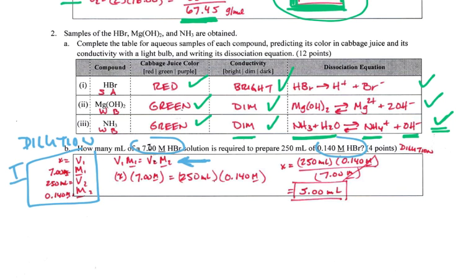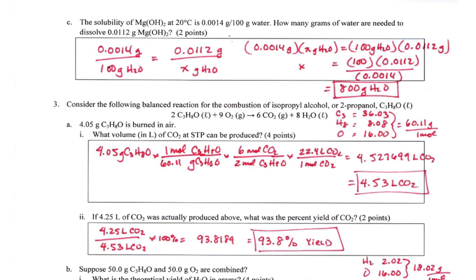Then I just substitute into my equation. So I is my information, E is my equation, S I substitute it in right here. And then I like to show all my work, so I go ahead and solve for X. X is going to be 250 times 0.140 divided by 7, and my molarity is cancelled out, and I'm left with 5 milliliters. This is a case where the volume can be in milliliters, it can be in liters, it doesn't matter. If you use milliliters here, your answer is going to be milliliters here.